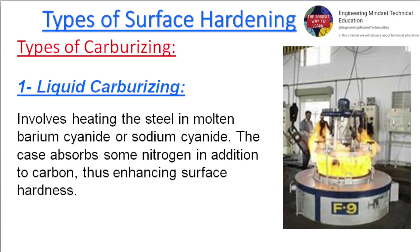Types of carburizing. 1. Liquid carburizing: involves heating the steel in molten barium cyanide or sodium cyanide. The case absorbs some nitrogen in addition to carbon, thus enhancing surface hardness.